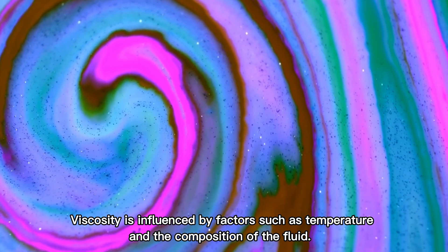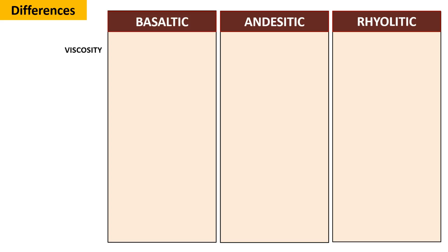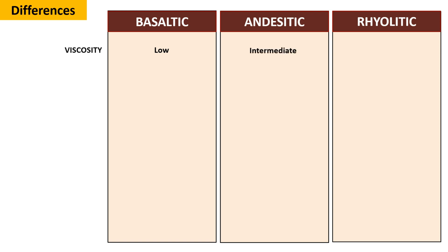Viscosity is influenced by factors such as temperature and the composition of the fluid. Basaltic magma has low viscosity. On the other hand, the viscosity of andesitic magma is intermediate between basaltic and rhyolitic magmas. Rhyolitic magma has the highest viscosity. The low viscosity of basaltic magma makes it the least explosive. The intermediate viscosity of andesitic magma results in moderate explosiveness, while the high viscosity of rhyolitic magma makes it the most explosive among the three types.